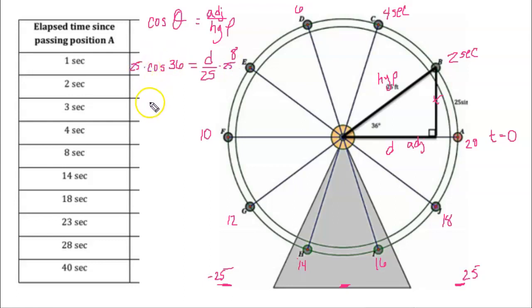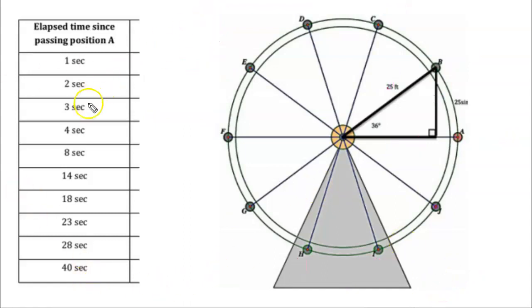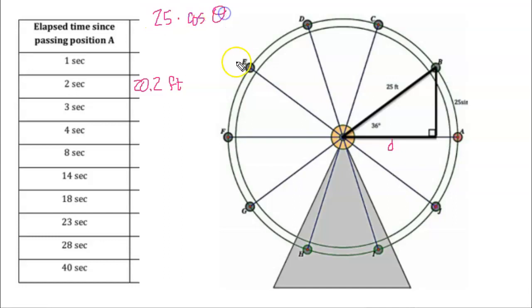When we calculate 25 times cosine of 36 degrees, we get a distance of 20.2 feet. That makes sense — it's a little short of 25, which looks about right visually. So 20.2 feet is reasonable. Since we're finding horizontal distances and using the radius times the cosine of the angle, we're no longer dealing with sine. The formula is: radius times cosine of the angle gives the sideways distance.